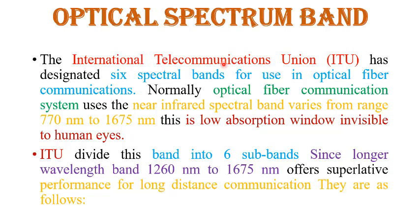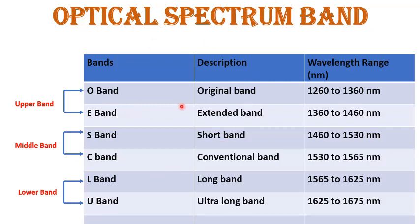The International Telecommunication Union has designed six spectral bands for use in optical fiber communication. Optical fiber communication systems use the near infrared spectral bands, which vary from 770 nm to 1675 nm. This is a low absorption window, invisible to human eyes. ITU divides this band into six sub-bands, from 1260 nm to 1675 nm, which experience less distortion, less attenuation, and allow signals to transmit over long distances.